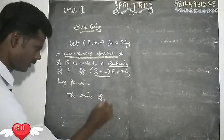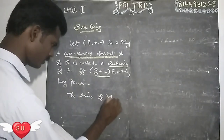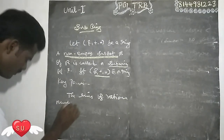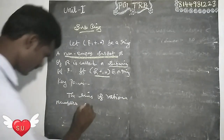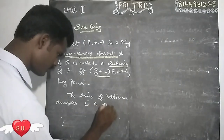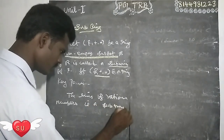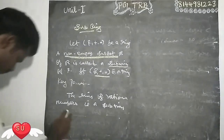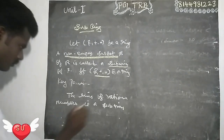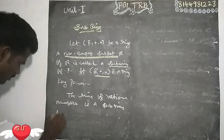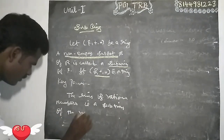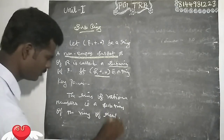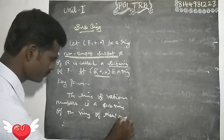The ring of rational numbers is a subring of the ring of real numbers.